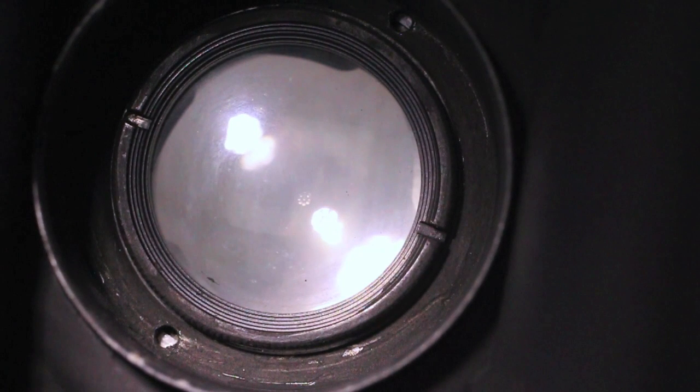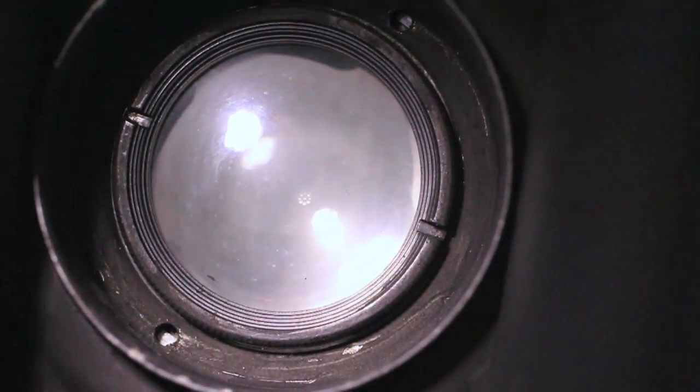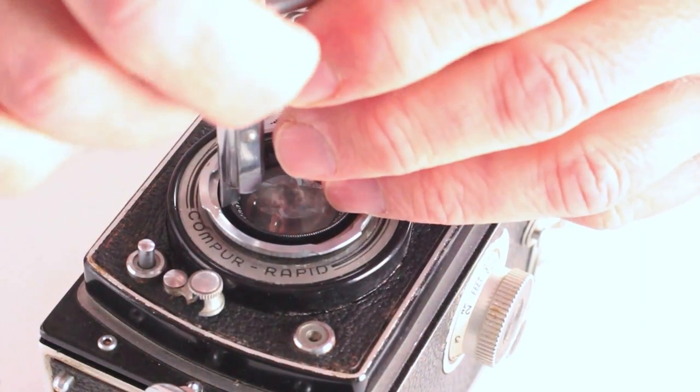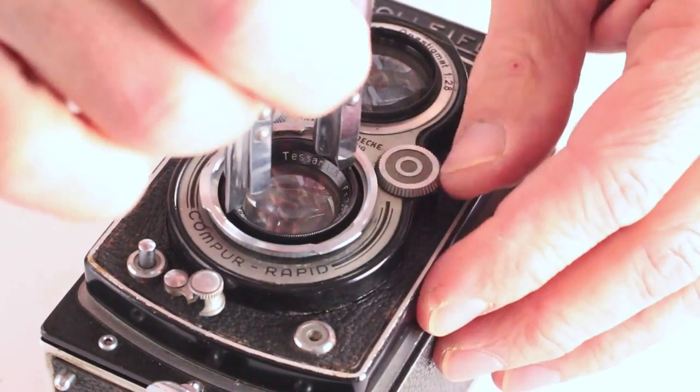Blocking open the shutter of this twin-lens Rolleiflex camera reveals how the lens has become foggy and mildewed over time. To access this damage, begin by removing the front lens element group.